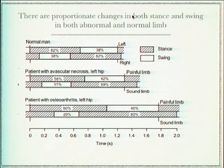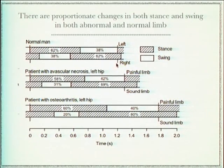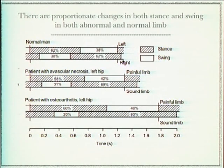One important thing to know is that even though one lower limb is involved, it does not mean the other limb will not change. The abnormal limb will bring about a comparative change in the gait cycle of the normal limb also.